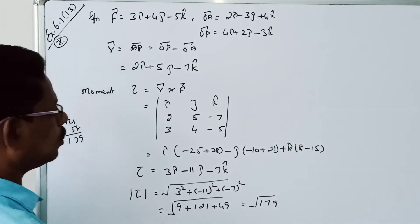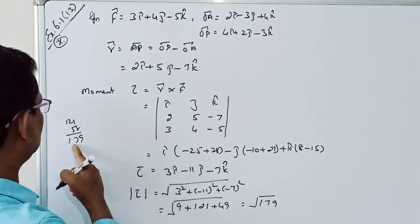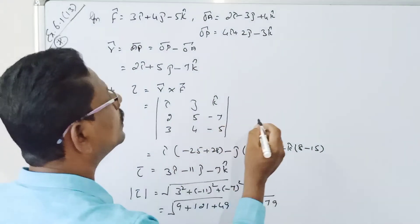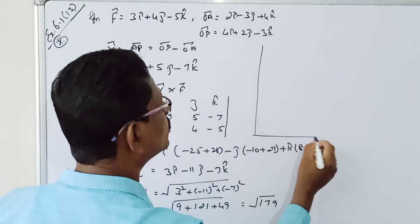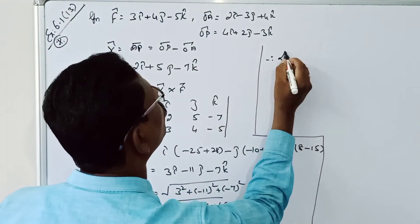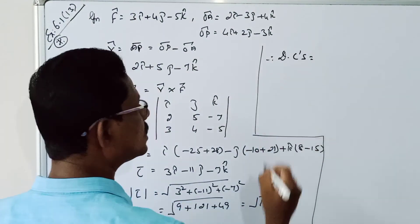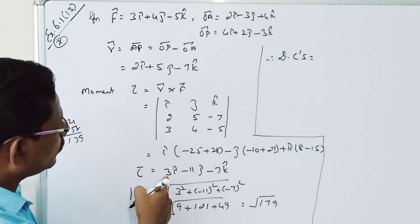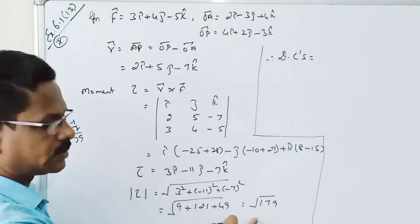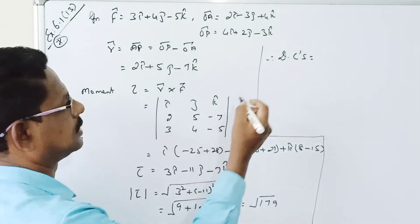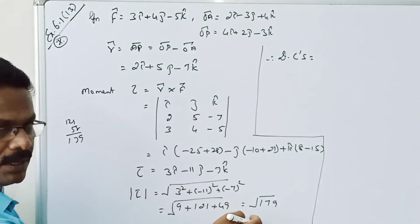Okay, therefore, what is direction cosines? Direction cosines means 3 by root of 179, minus 11 by root of 179, okay.